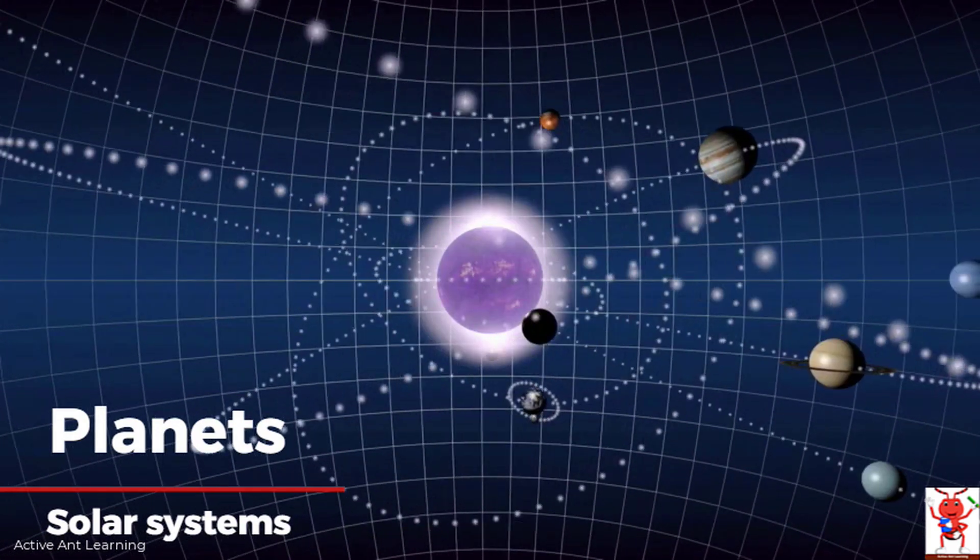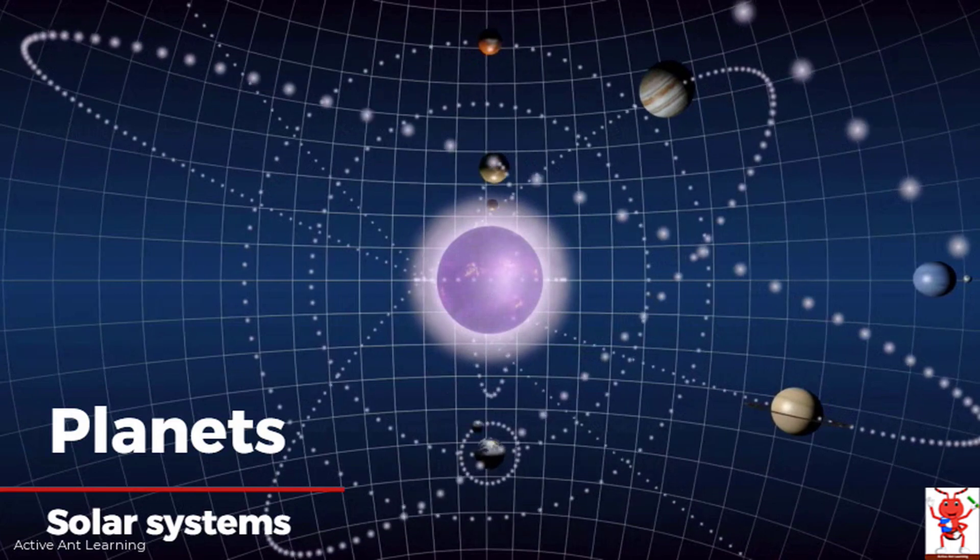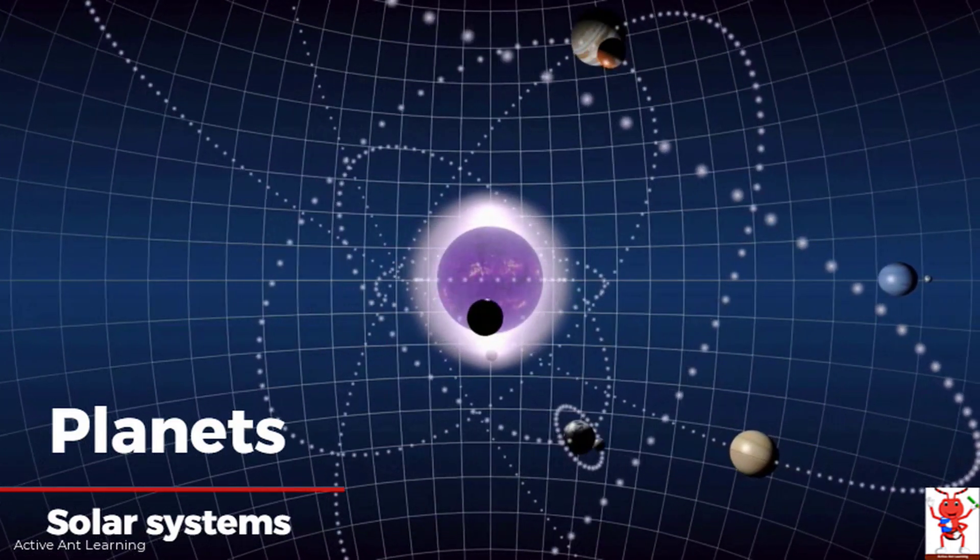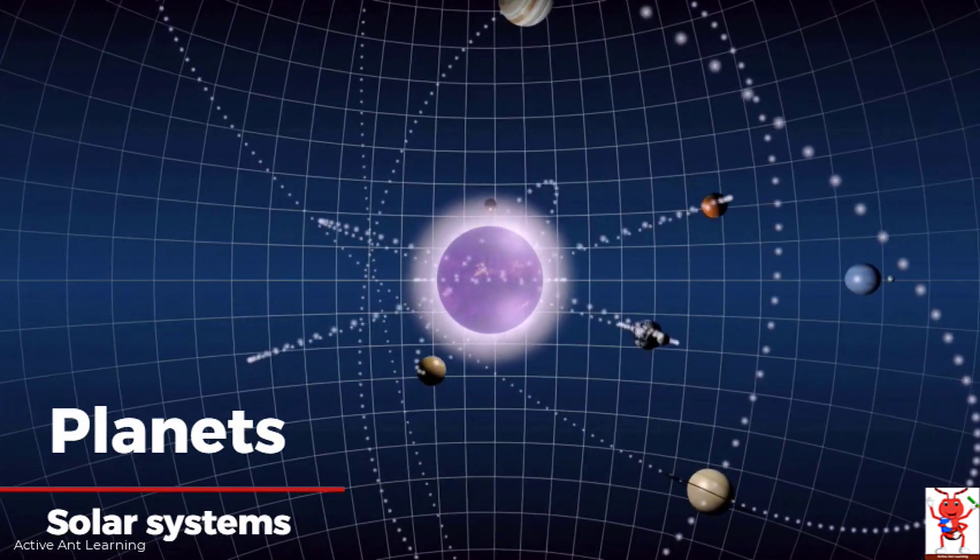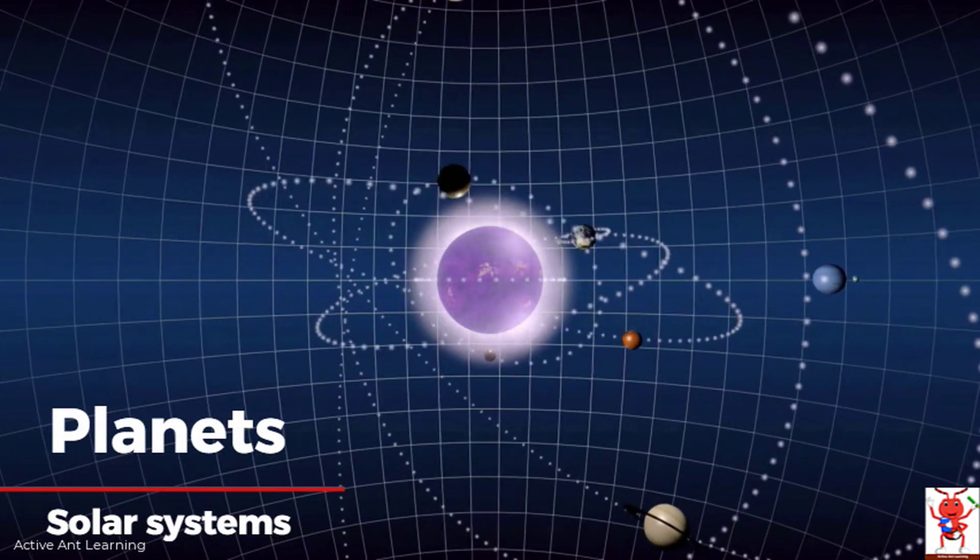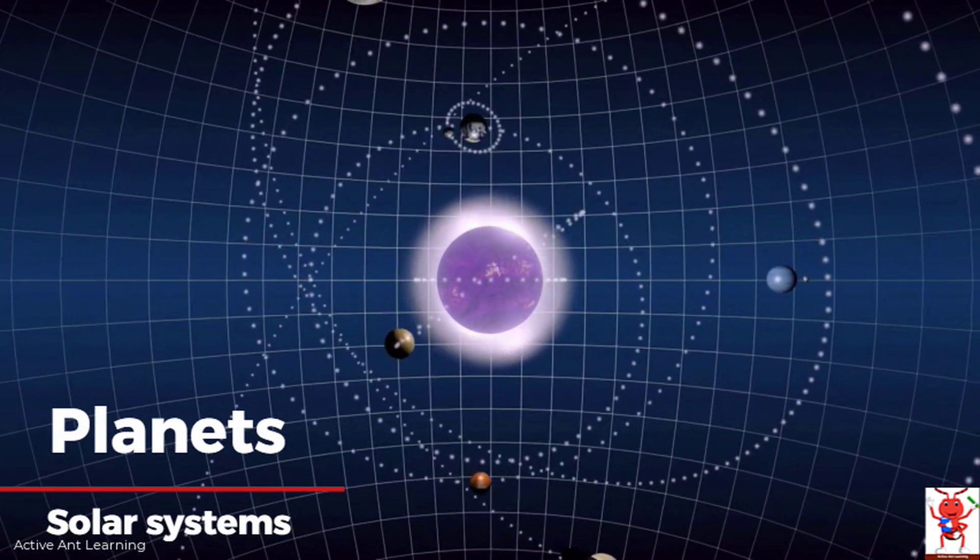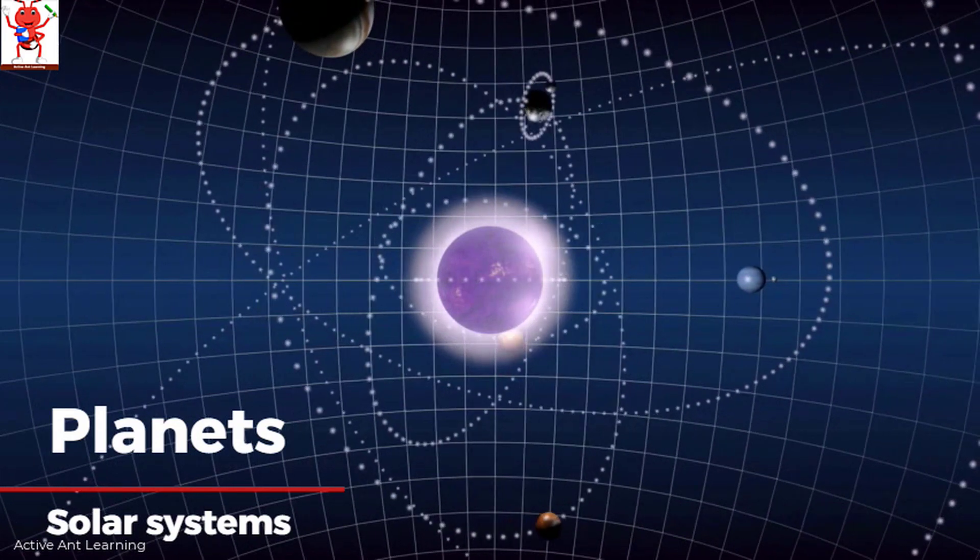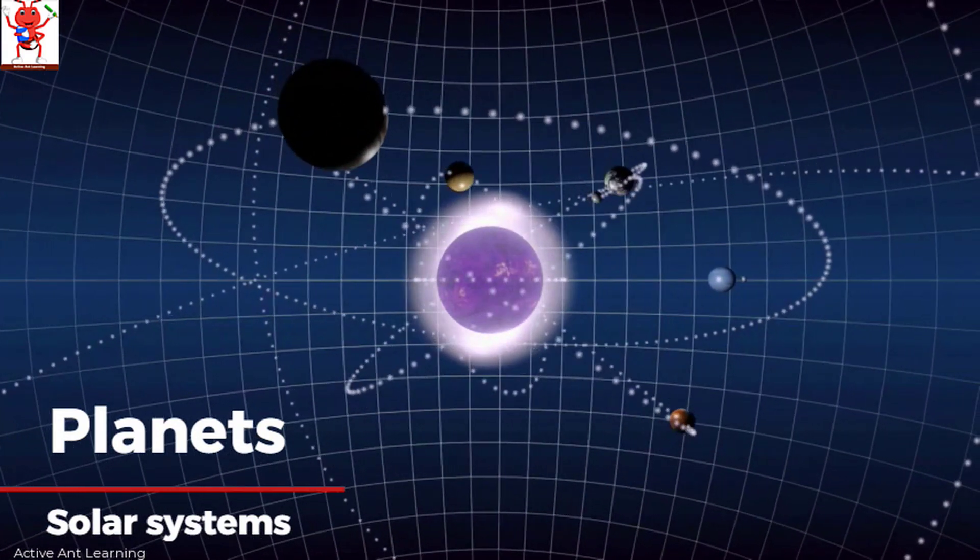So let's continue our let's learn today series. Today we will talk about planets. Friends do you know what is a planet? A planet is an object which is quite big in size and orbits around the sun.